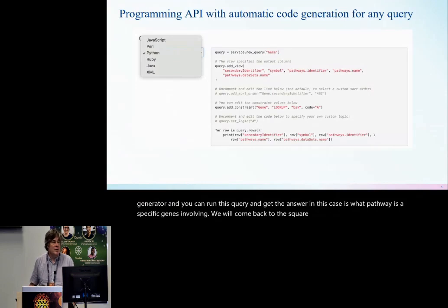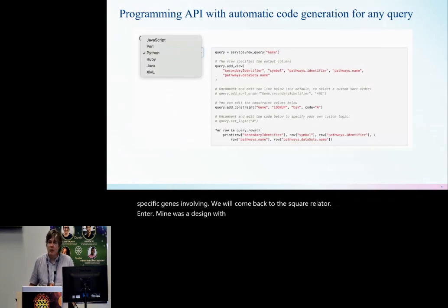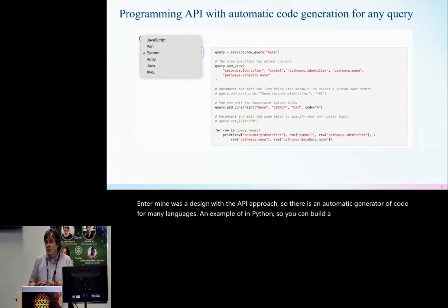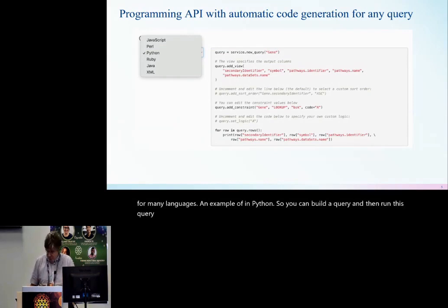InterMine was designed with an API approach. There is an automatic generator of code for many languages. Here's an example in Python — you can build a query and then run this query within your preferred language.